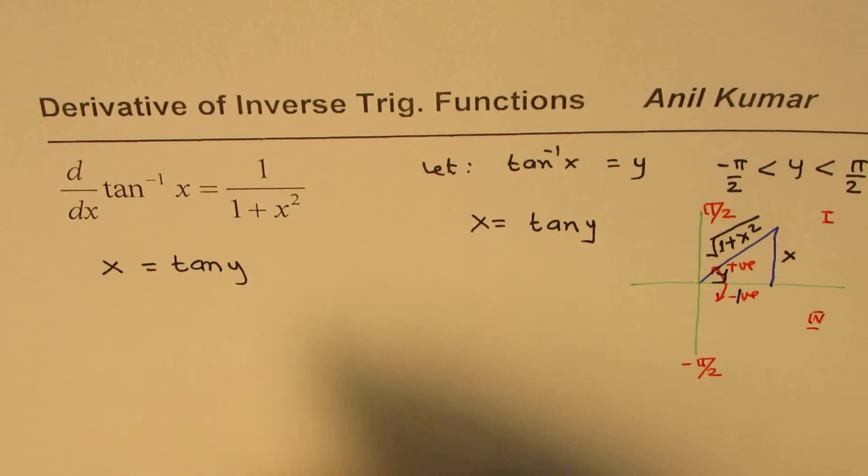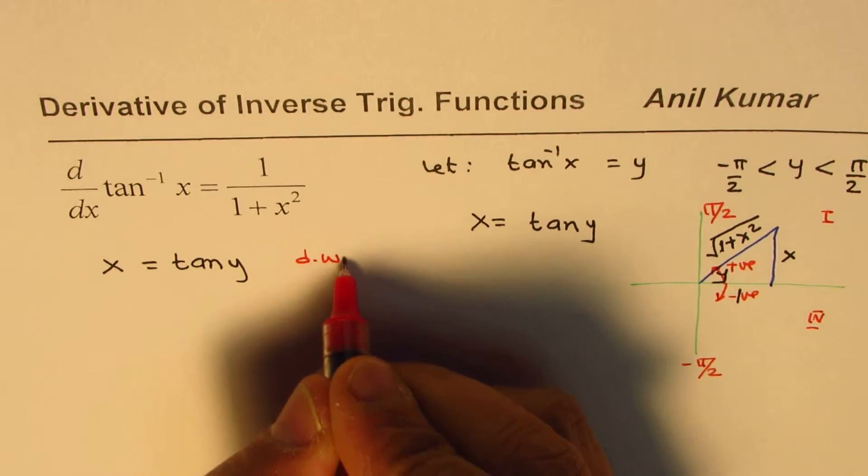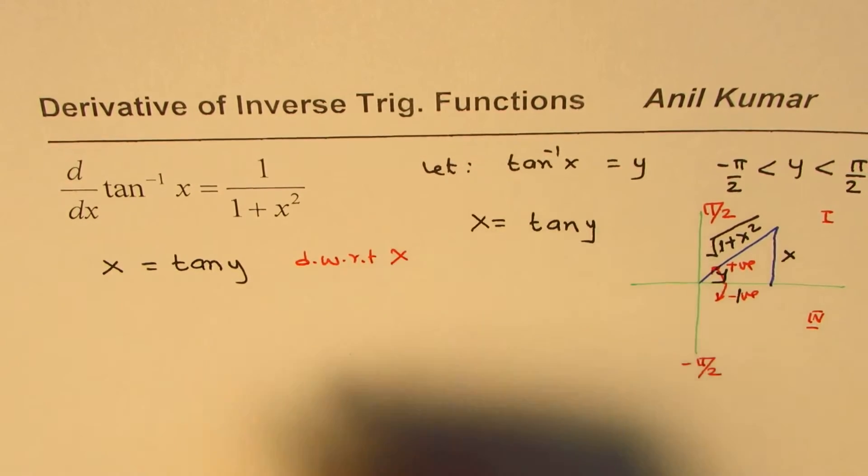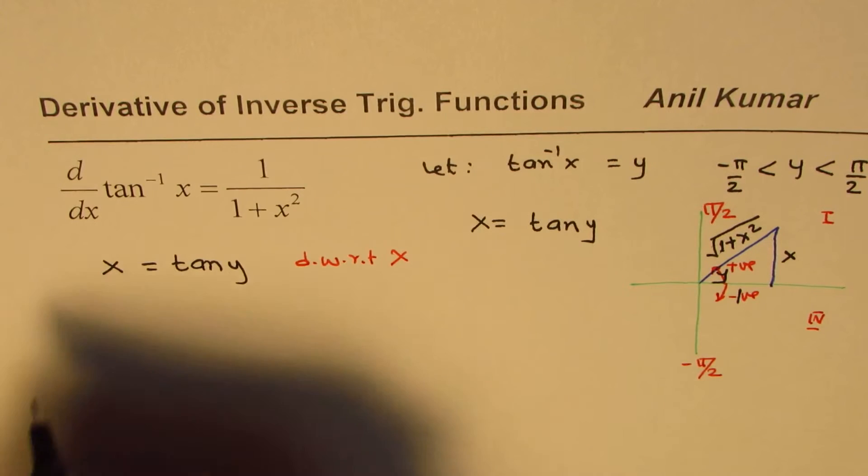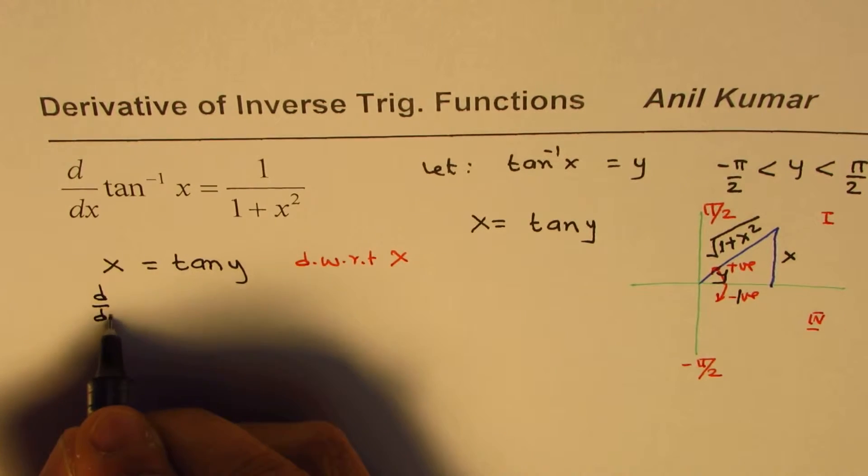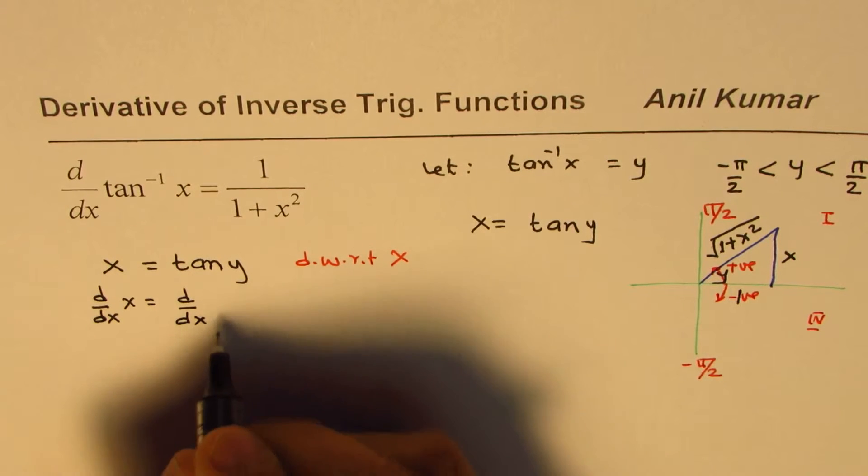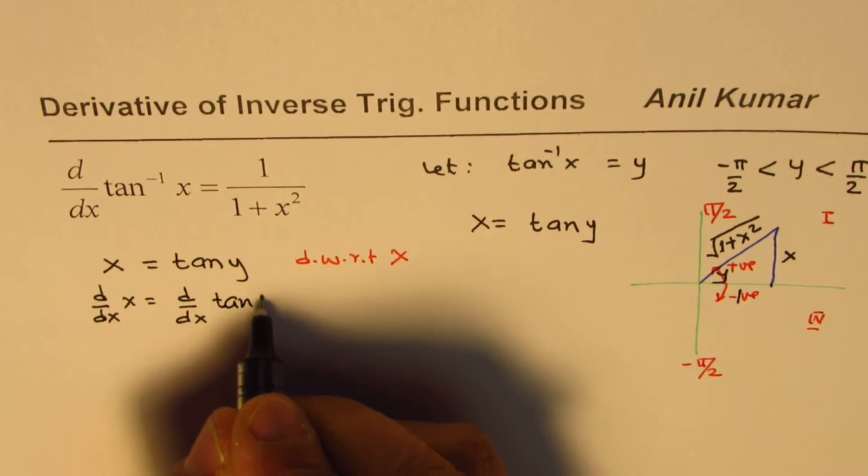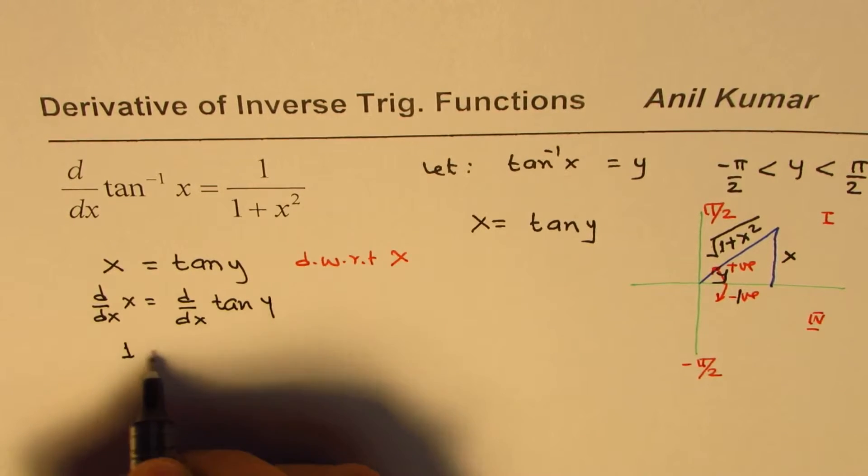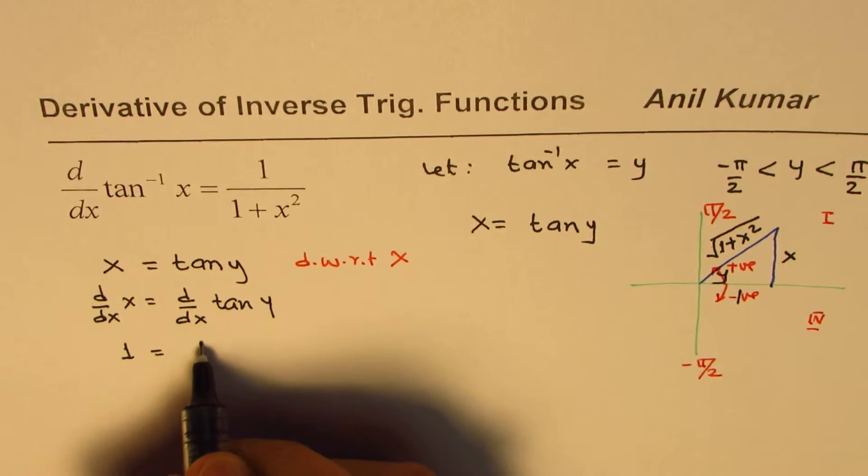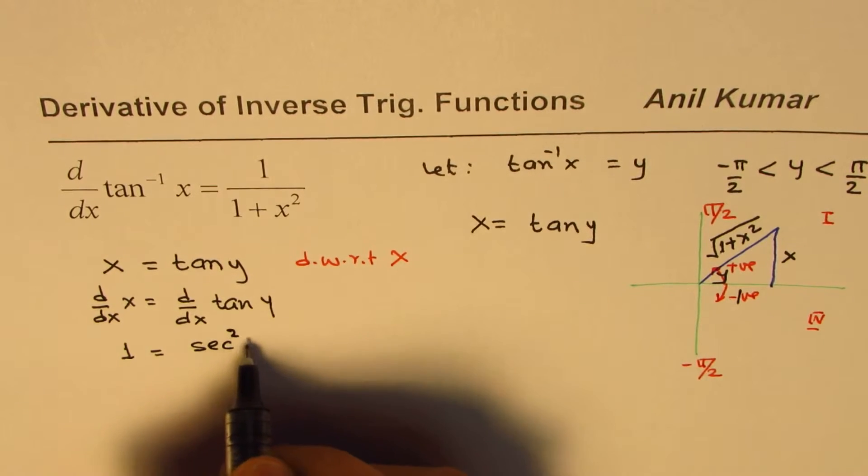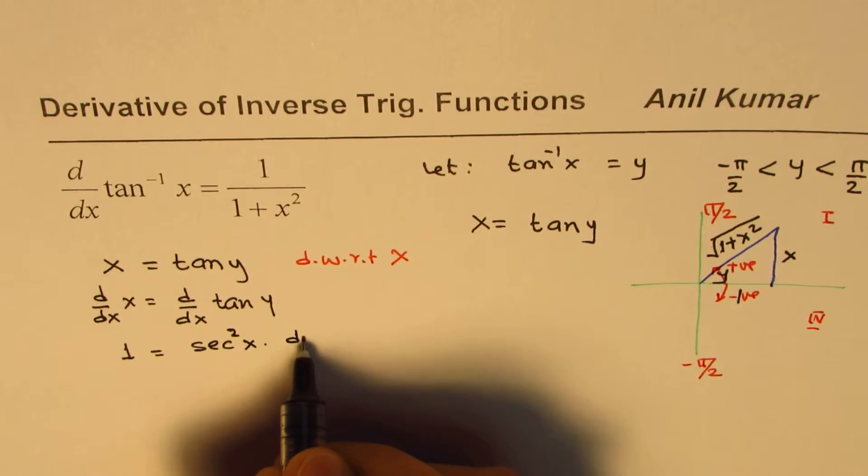If you differentiate both sides with respect to x, what do you get? We get d/dx of x equals d/dx of tan y, which is 1 equals derivative of tan y is secant squared y times dy/dx.